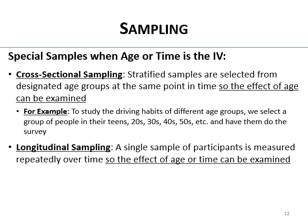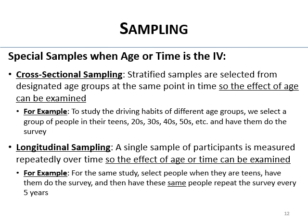Longitudinal sampling is when a single sample of participants is measured repeatedly over time so you can look at both the effect of age and time simultaneously. You follow the same people. For example, you select people when they're teens, have them do a survey, and then have those same people repeat that survey every five years — so instead of sampling new age groups each time, the same group is tracked. That's a longitudinal sample.